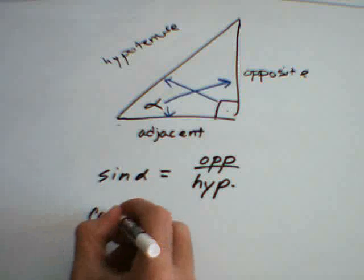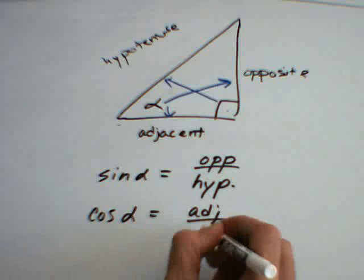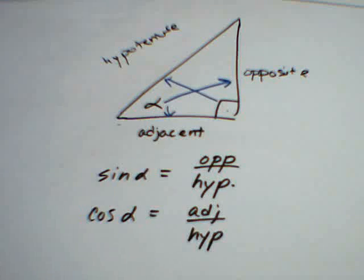The cosine of the angle is equal to the length of its adjacent side divided by the length of the hypotenuse.